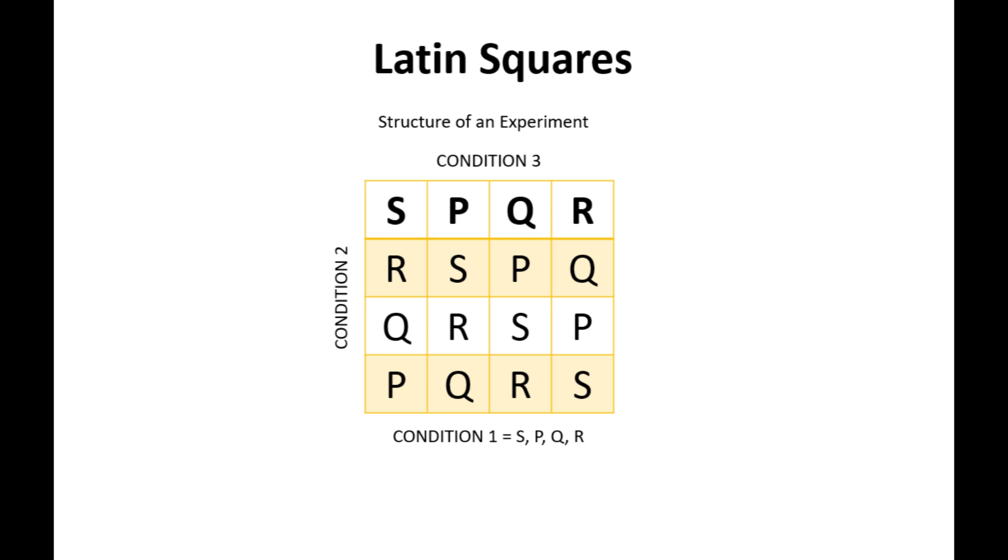Each row represents one type of condition that affects the values within. The columns represent a second condition, and each square represents the third condition affecting variables.